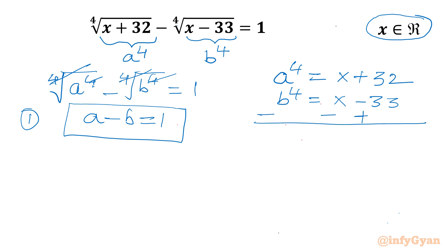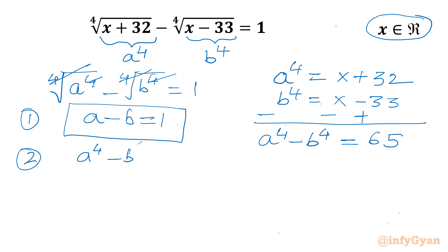Now subtracting the second substitution from the first: a⁴ - b⁴ = (x+32) - (x-33) = 32 + 33 = 65. So our second equation is a⁴ - b⁴ = 65. We will now solve this system of equations to find the value of x — first calculating a or b, then determining x.